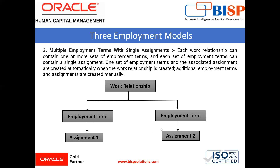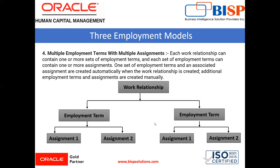Next is multiple employment term with multiple assignment. In this employment model, a work relationship contains one or more sets of employment terms, and each set of employment terms can have one or more assignments. One set of employment terms and the associated assignment are created automatically; additional employment terms and assignments are created manually. You can see one work relationship, two employment terms, and multiple assignments under each.